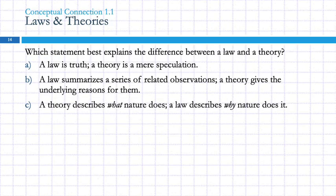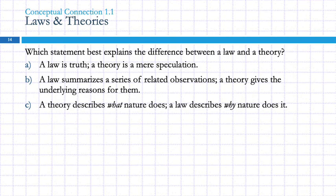Here's a question — and any time you have a multiple choice question, read all the choices before you make your pick. Which statement best explains the difference between a law and a theory? A: a law is truth, a theory is mere speculation. B: a law summarizes a series of related observations, a theory gives the underlying reasons for them. C: a theory describes what nature does, a law describes why nature does it. The answer is B. C is exactly backwards — a law describes what nature does and a theory describes why. A is just someone who doesn't understand science.